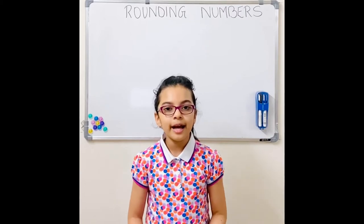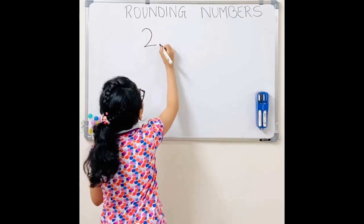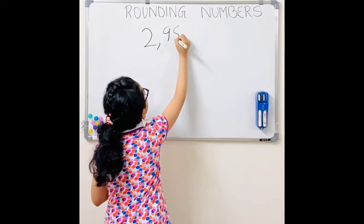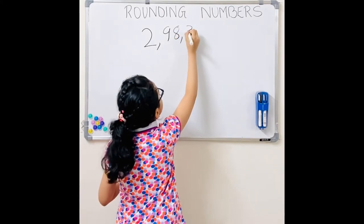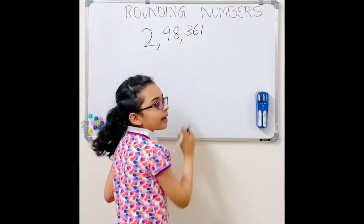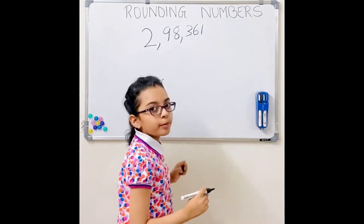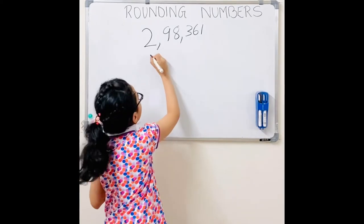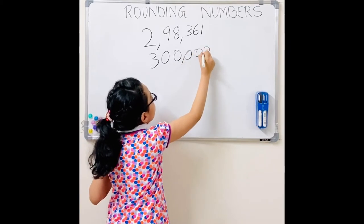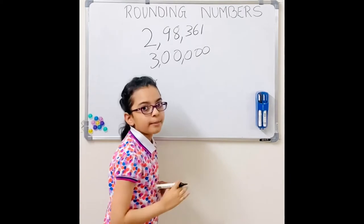Now coming back to the population. Let's imagine the population of a place is 298,361. This one rounded to the nearest number would be 300,000. We mostly round that because it would be difficult to remember all these numbers in order, so we make most of them zero — the approximate number.